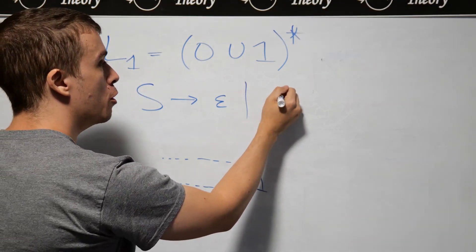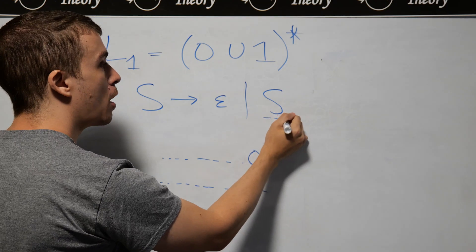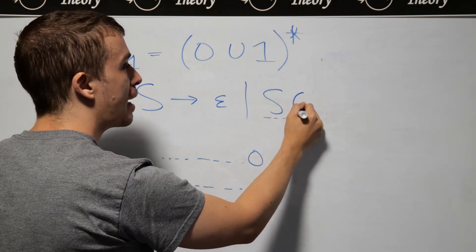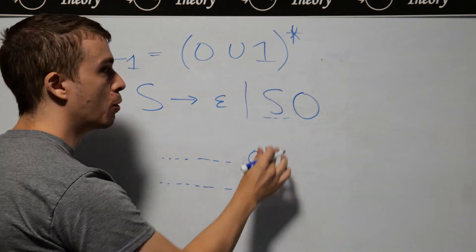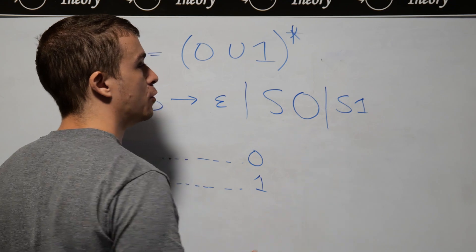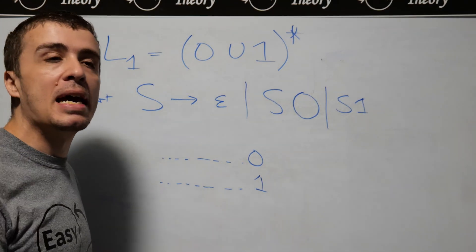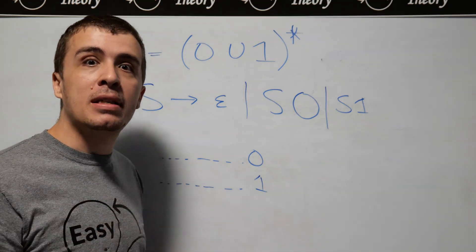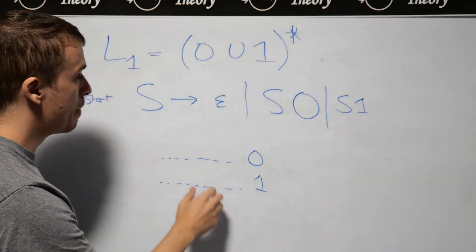And so therefore, no matter what string we've made so far, which is corresponding to this S right here, we need to allow ourselves to make a zero afterward, but also allow ourselves to make a one afterward. And so therefore, this is a context-free grammar for this particular language. Now, there are many other types of context-free grammars we could have made.